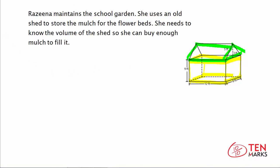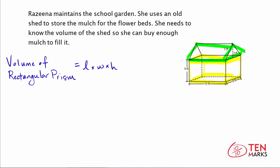For the rectangular prism on the bottom, we find the volume by multiplying the length times the width times the height. The length and width are on the bottom: 12 feet and 8 feet. The height is 9 feet. 12 times 8 is 96, and then times 9 gives you 864.